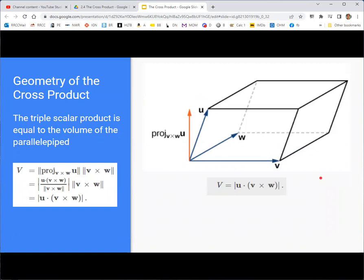We talked about the triple scalar product where you do a cross product and then a dot product. If you look at the absolute value of that, it's equal to the volume of the parallelepiped, which is this sort of three-dimensional parallelogram formed by the three vectors. You can see the derivation of that here in terms of projections.